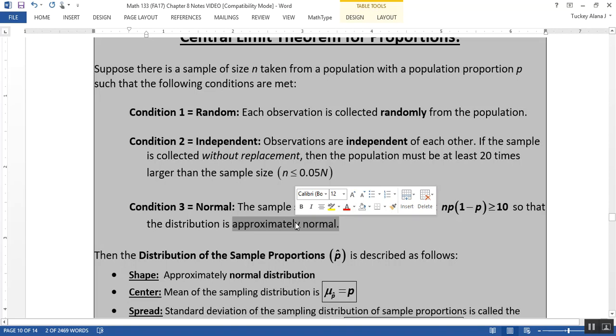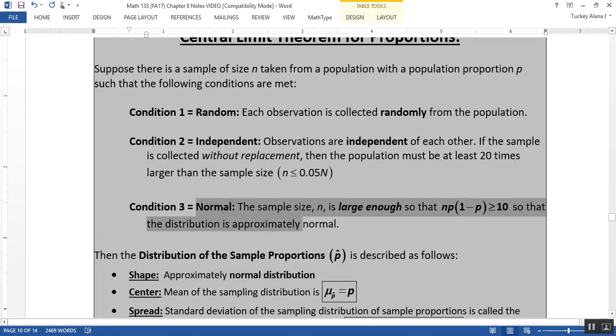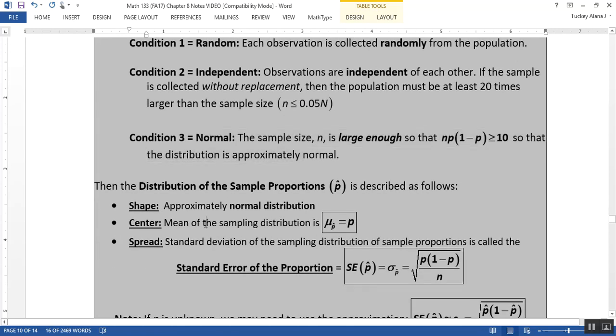If you have those three conditions met, then the following is true: you have a shape that is approximately normal, well of course because that was condition three. Then you'll have a center which is the mean of your p hats. If you take the average of all your p hats you'll have p, the population proportion.